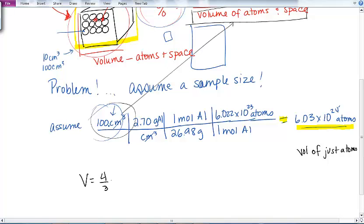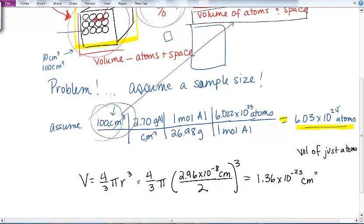If it's a sphere, volume is 4 thirds pi r cubed. So that's going to be equal to 4 thirds pi. Now my radius, this was the diameter, 2.96 times 10 to the minus 8th. That's a diameter. So I need to divide it by 2 to get it to be a radius. That's the radius cubed. So if we plug that into your calculator, I get a volume of 1.36 times 10 to the minus 23 cubic centimeters. And I'm going to just make this a little simple so I remember. That's per one atom. That's the volume of an atom.